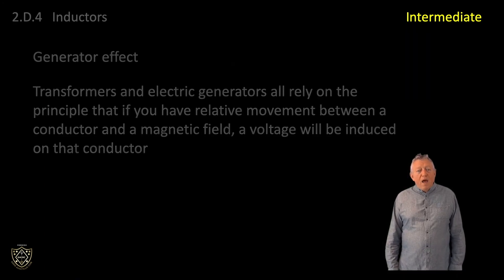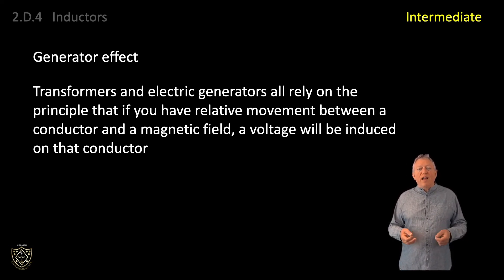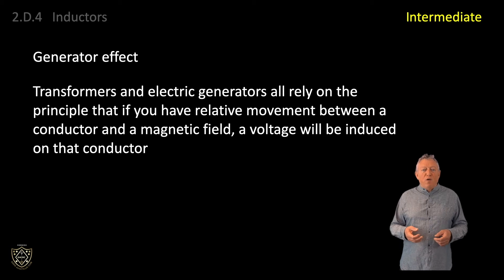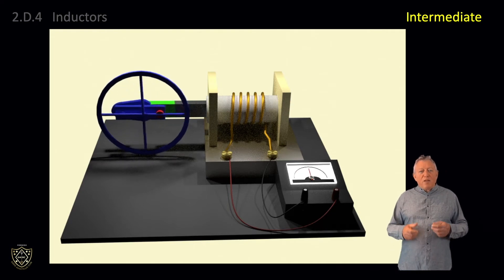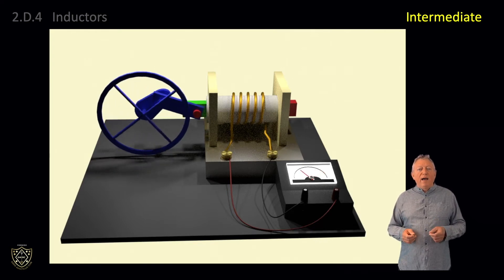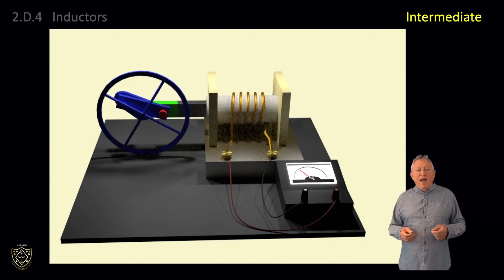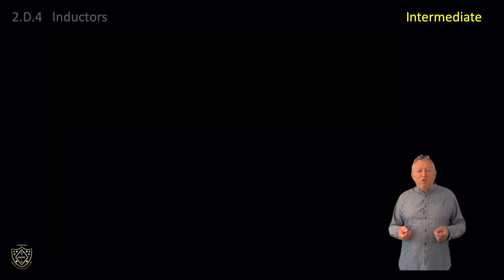Generator effect. Transformers and electric generators all rely on the principle that if you have relative movement between a conductor and a magnetic field, a voltage will be induced on that conductor, and if the conductor is part of a circuit, a current will flow in that circuit. In the animation, the bar magnet moves through the coil of wire and the lines of flux cut the wire, inducing a voltage and hence current as the circuit is completed by the ammeter. The force exerted on the magnet to move it through the coil is translated into electrical current.